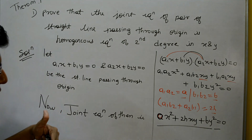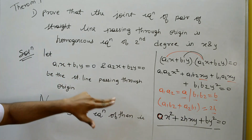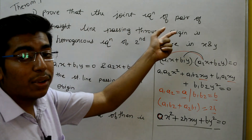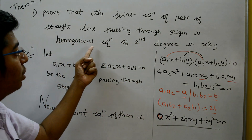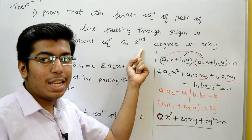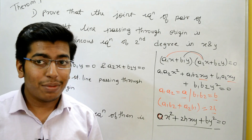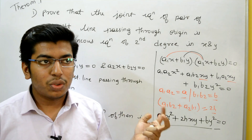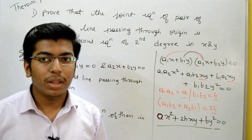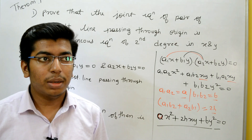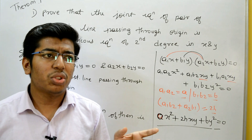Up to here you will get two marks. Then you must write: 'Hence the joint equation of a pair of straight lines passing through the origin is a homogeneous equation of second degree in X and Y.' Only then will the examiner give you full marks. These two theorems are important because every year one of them appears in the board examination paper for 3 or 4 marks.